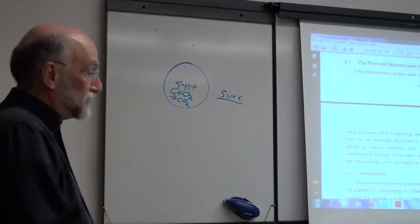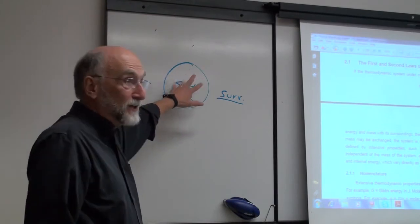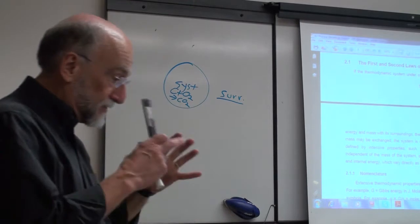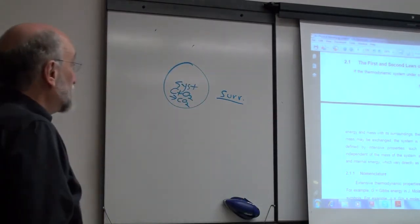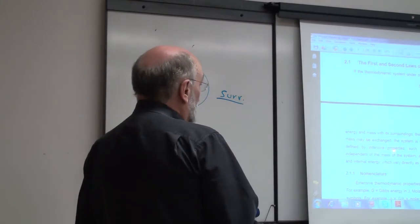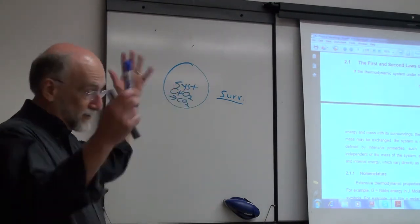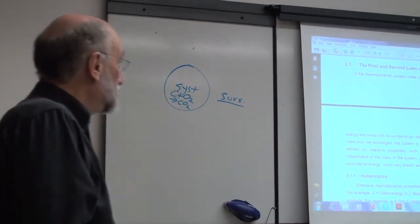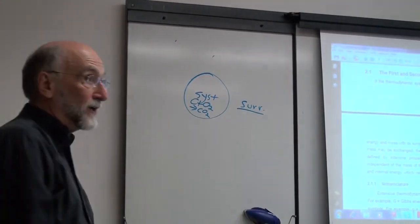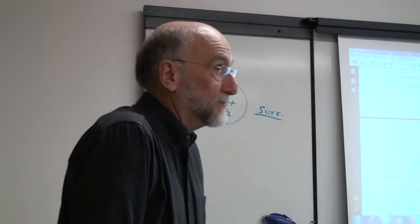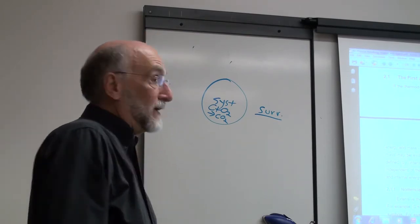If the system is permitted to exchange both energy and mass with its surroundings, it's an open system. If energy but not mass is exchanged, the system is closed. Usually we define systems as closed — it's easier to work with, because the mass of the system remains constant. The state of a system is defined by two types of properties: intensive properties like temperature and pressure, which are independent of the mass; and extensive properties like volume and internal energy, which vary directly as the mass of the system.